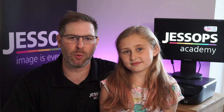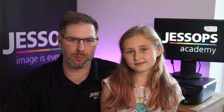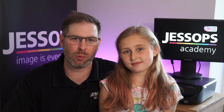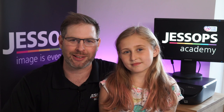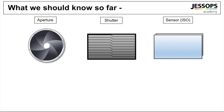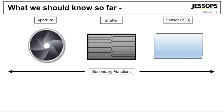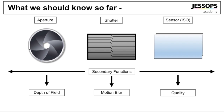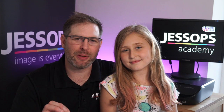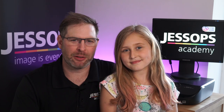Today we're going to be looking at full manual control. But before we do that, let's have a quick recap on what we looked at last week. We looked at the semi-automatic modes where you could set your priority, whether it be aperture to impact depth of field, or shutter priority to impact motion blur. And if that still bamboozled you, there was another mode called P-mode.